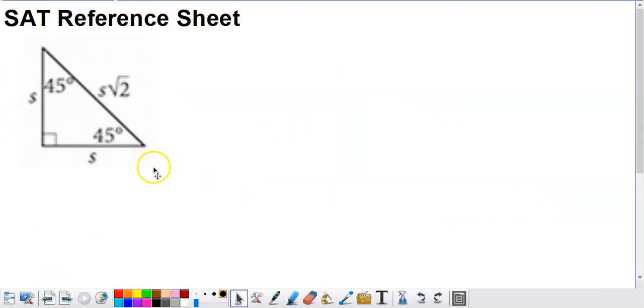So this is something that you will find on the SAT reference sheet. The SAT reference sheet does provide you with a 45, 45, 90 right triangle. And they tell you that these sides are going to measure the same length. They use the variable S to represent the measures of those sides. And then this side is going to be whatever S is times the square root of two.